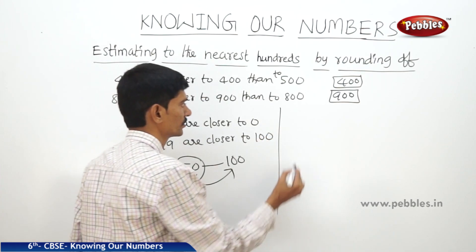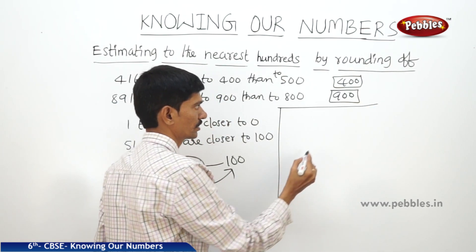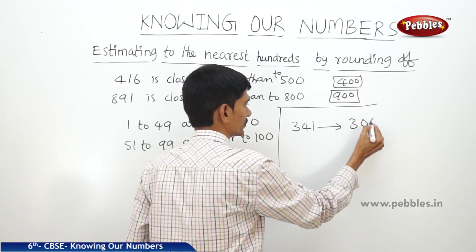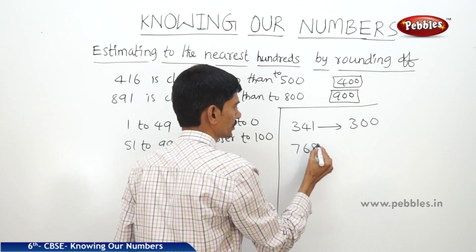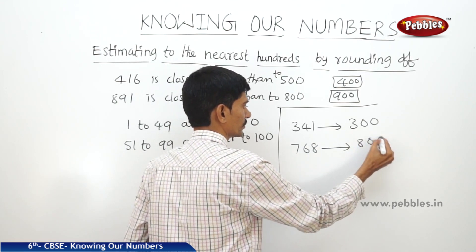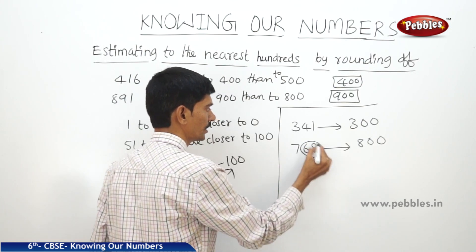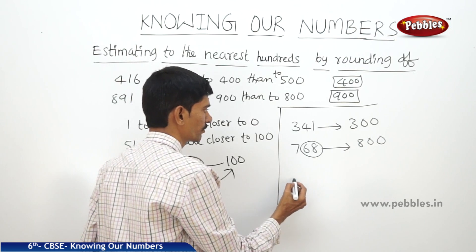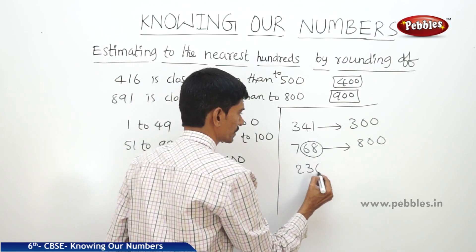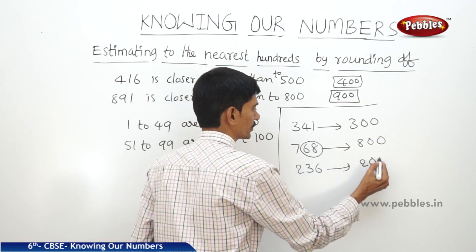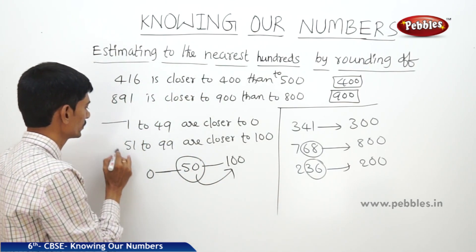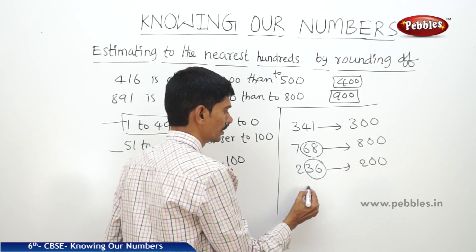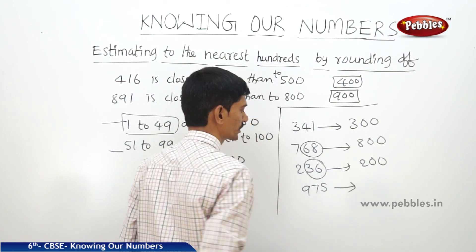It is common practice to round off 50 to 100. For example, 341 can be rounded off to 300, and 768 can be rounded off to 800 because 68 belongs to the second case, going to the next 100. Similarly, 236 rounds off to 200, and 975 can be rounded off to 1000.